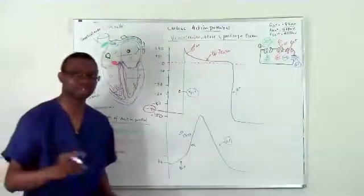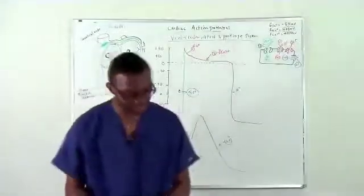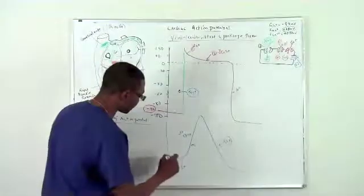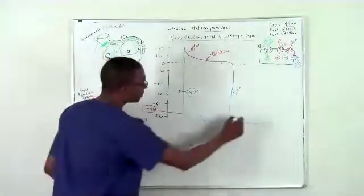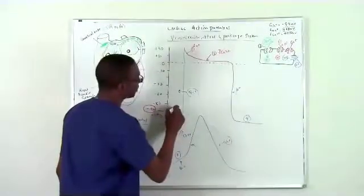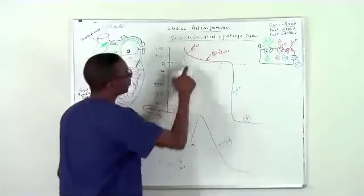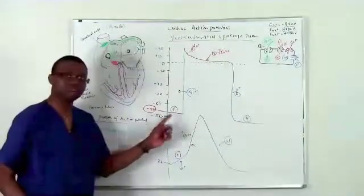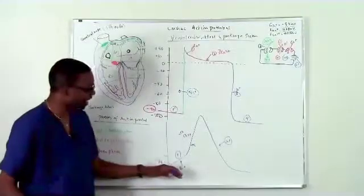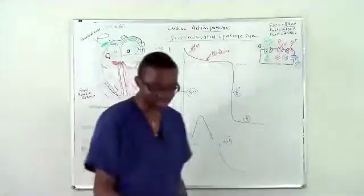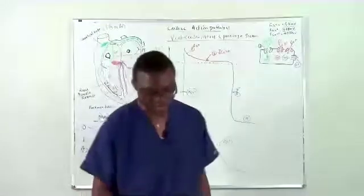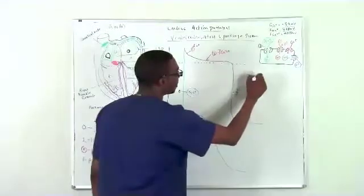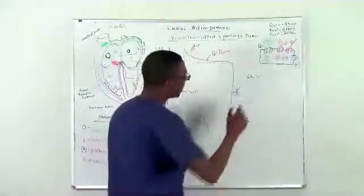That is the big difference. That is why the intrinsic rate of phase 4 depolarization - remember, phase 4, then 0, 1, 2, and 3, back to 4. The intrinsic rate of depolarization in the SA node is the fastest. The intrinsic rate of depolarization in the heart is fastest in the SA node, so the SA node depolarizes faster than the AV node.